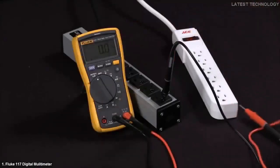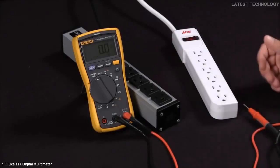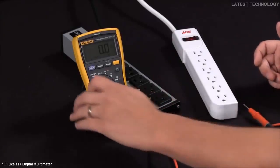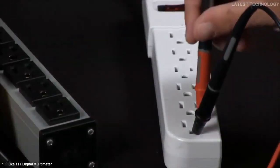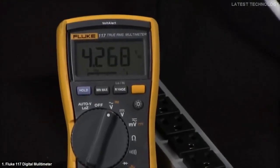In our second instance, we're going to take a measurement with something that has an improper ground. We'll go back to our voltage setting. We'll go ground to hot. And you can see that I'm getting a low voltage reading.